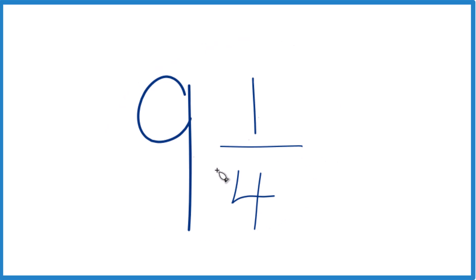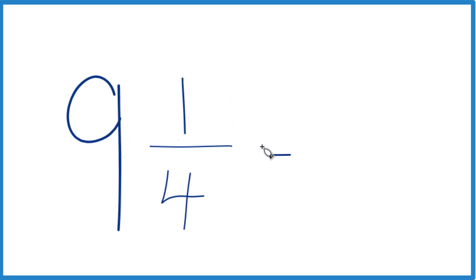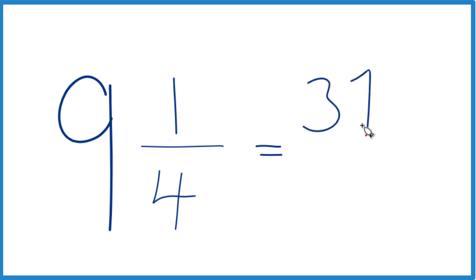Here's how you do it. You take the whole number — that's the 9 — and multiply that by 4. That gives you 36. 9 times 4 is 36, plus 1 is 37. That becomes the numerator. For the denominator, just bring the 4 across.